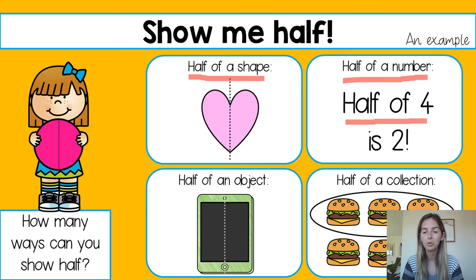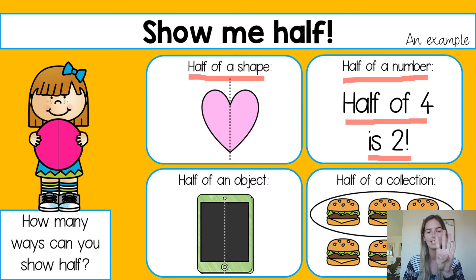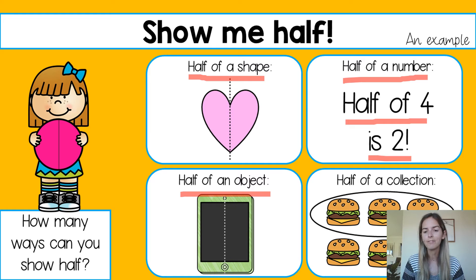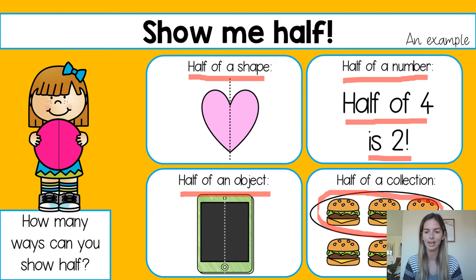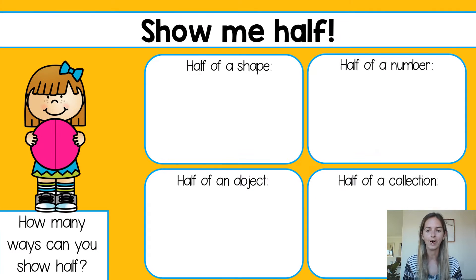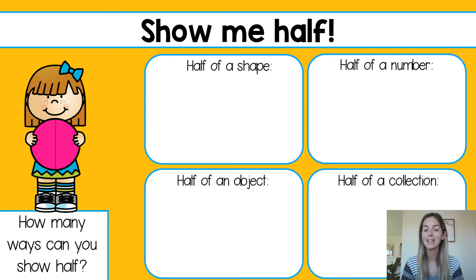Here I have half of four is two, because two plus two is four. If I have four here and I take away two, I'm left with two. Half of an object — here I have an iPad or a phone. And then half of a collection — here I have six hamburgers, one through six, and then a circle around half of them, which is three. Half of six is three and three plus three is six. So the activity has half of a shape, half of a number, half of an object, and half of the collection.